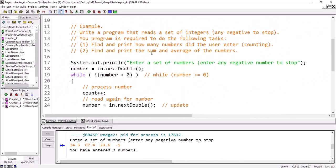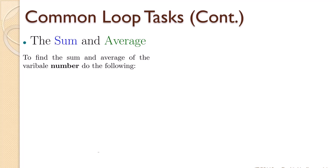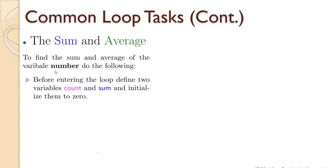Now the second task: finding the sum and average of the numbers. To find the summation and average of a variable called 'number', we have to do the following. Before entering the loop, define two variables: one called 'count' and one called 'sum'. Count is already defined to count how many numbers the user enters. Now we define 'sum', and both should be initialized to zero.